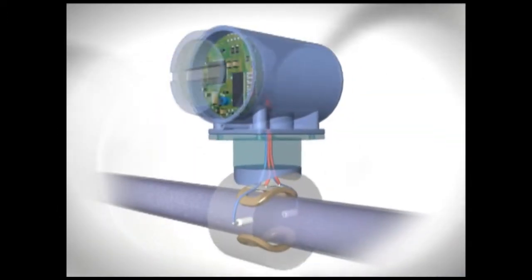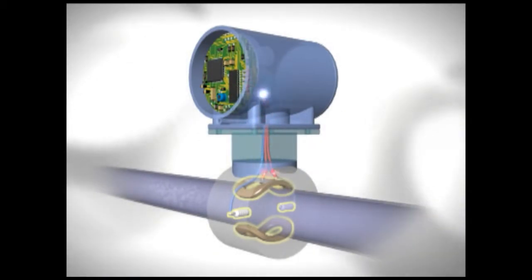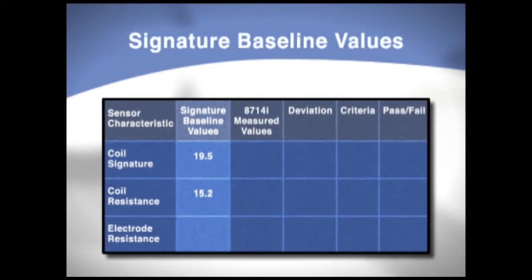Flow tube sensor calibration is verified in a similar manner. At the time of initial calibration, the 8714I establishes a flow tube sensor signature for the coil circuitry and electrode circuitry and stores that information in non-volatile memory. This establishes a baseline of the meter's magnetics.